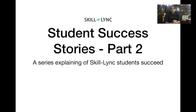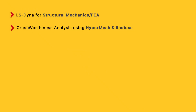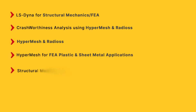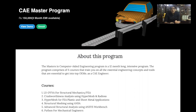This is Student Success Stories Part 2, a series to explain the journey of skilling students and how they achieve success. The course I wanted to speak about today is the CAE Masters Program. In this program you take six courses: Introduction to FEA using LSDYNA, Crashworthiness Analysis using HyperMesh and Radioss, HyperMesh for FEA Plastics and Sheet Metal Applications, Structural Meshing using ANSA, Advanced Structural Analysis using ANSYS Workbench, and Python for Mechanical Engineers.